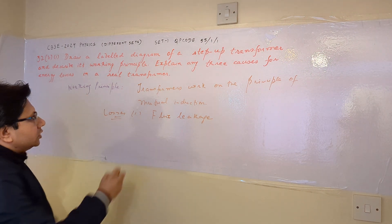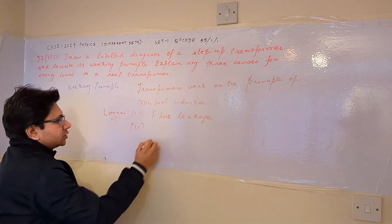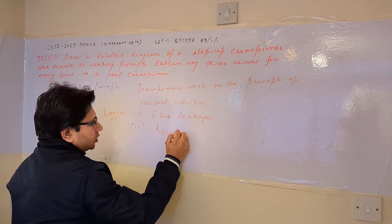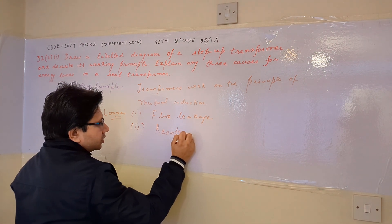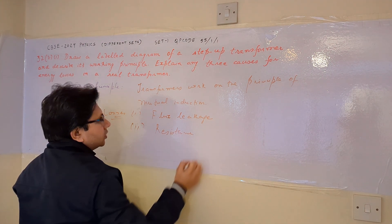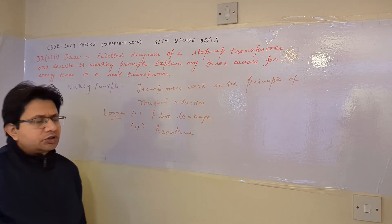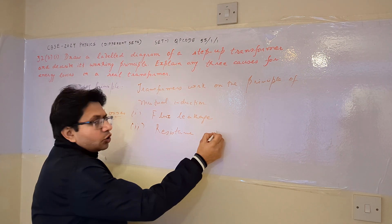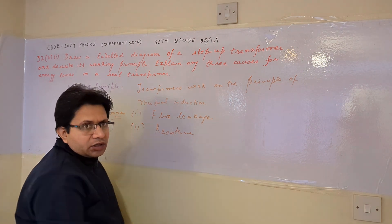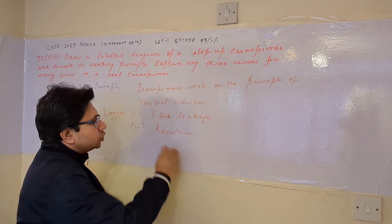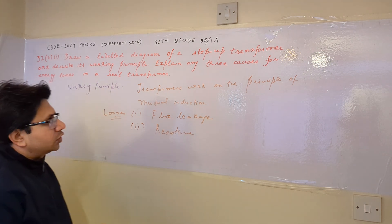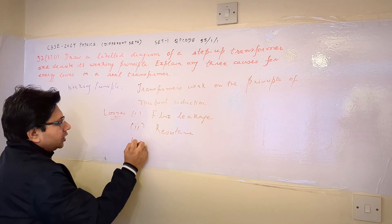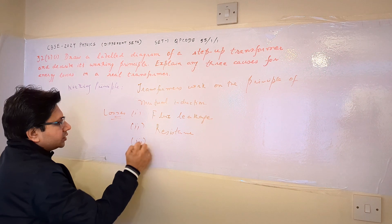The second cause of loss is the resistance of the core. The resistance of the core creates heat losses, known as I-squared-R losses. This is the second cause of energy losses in a real transformer.